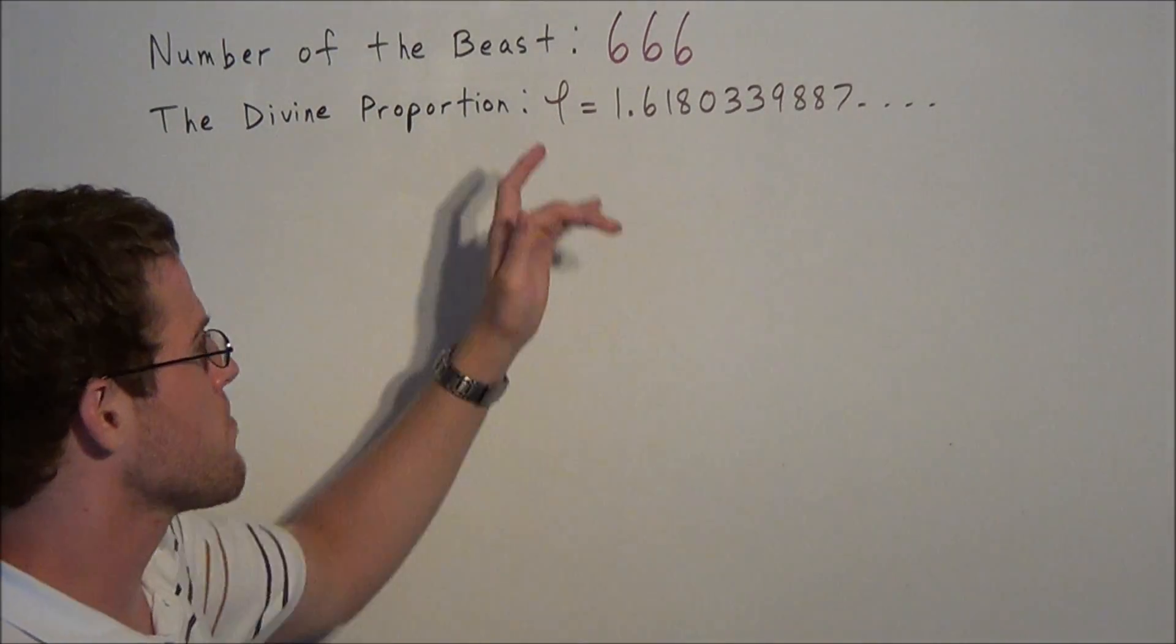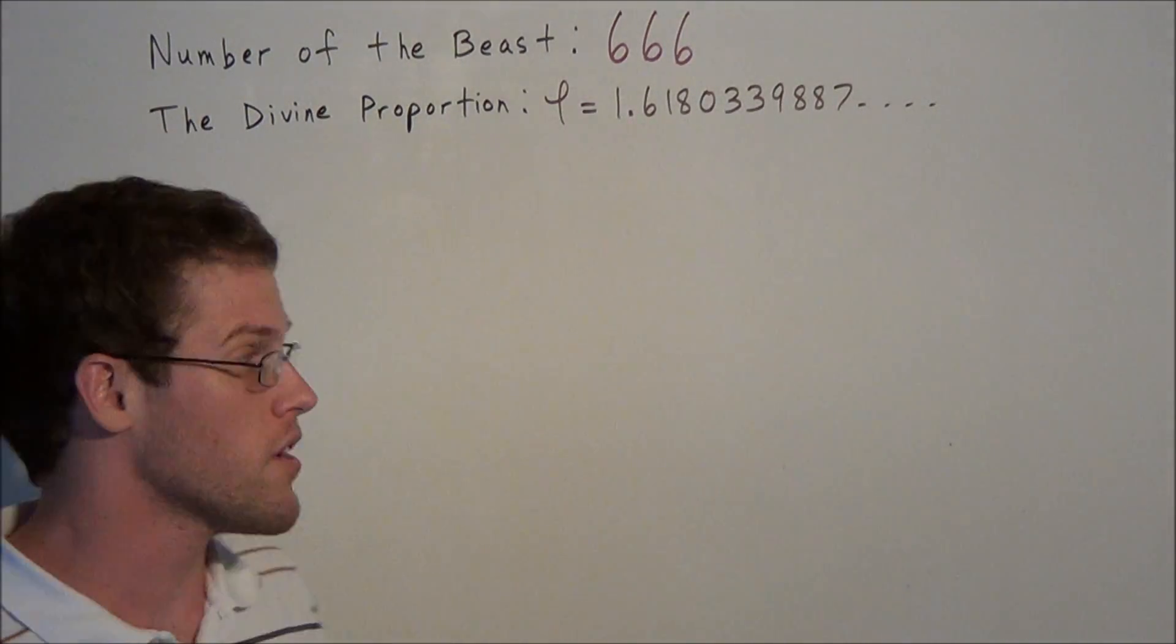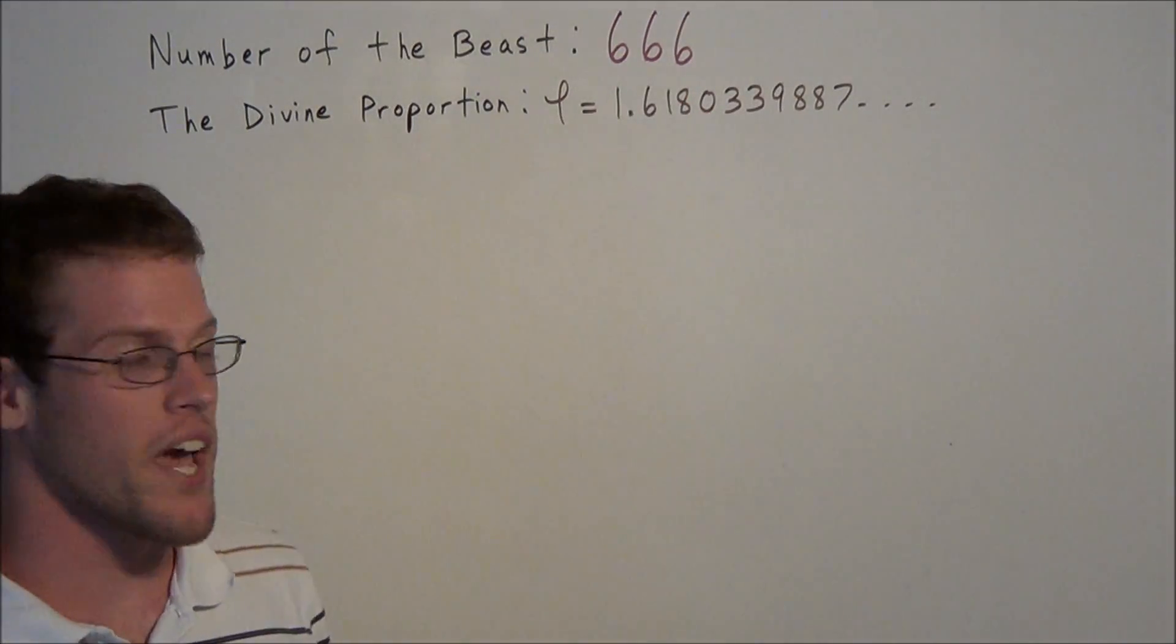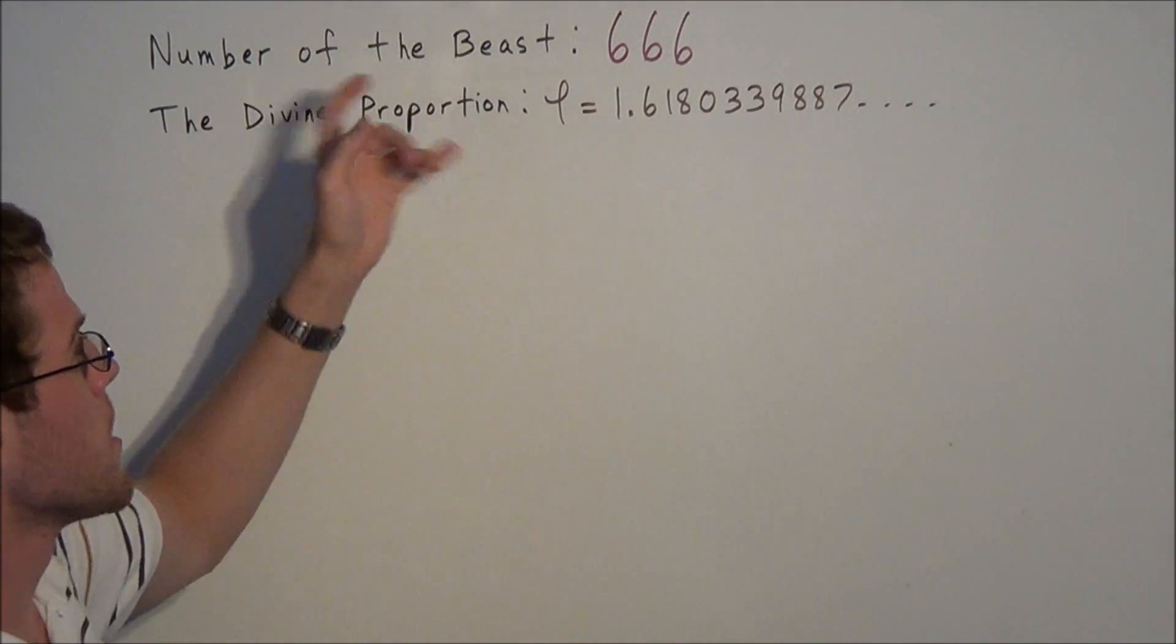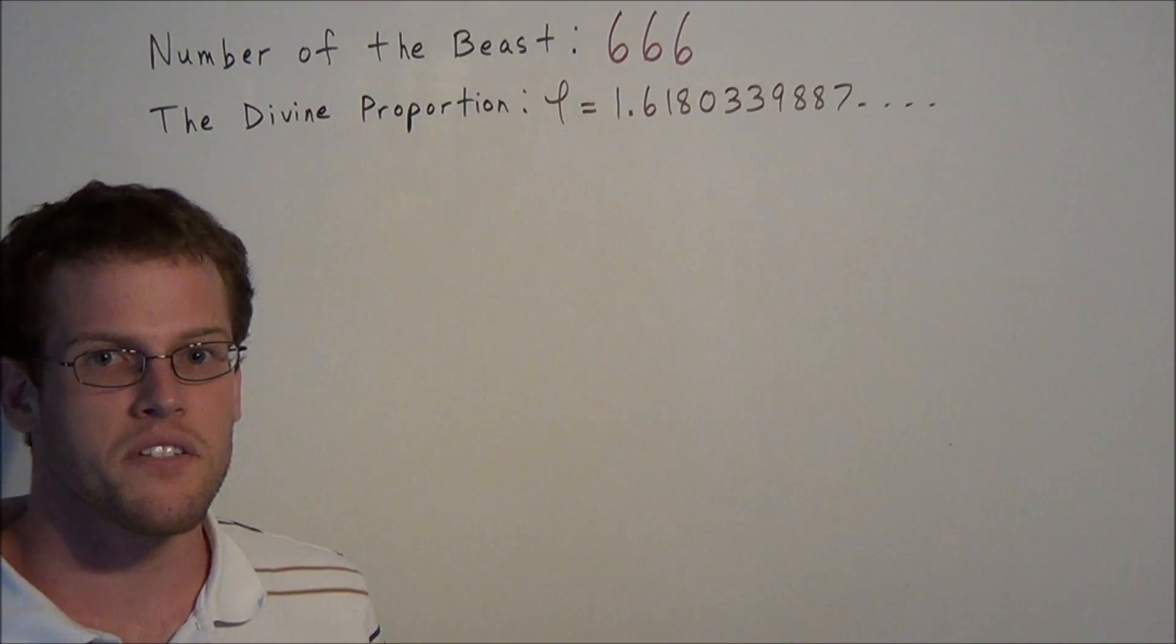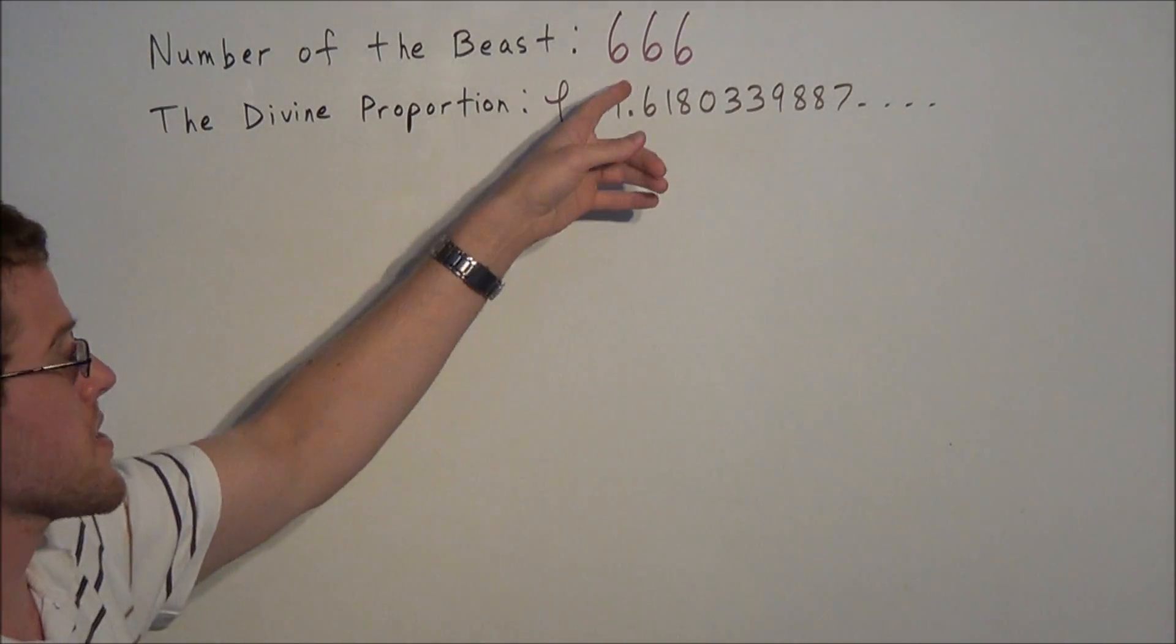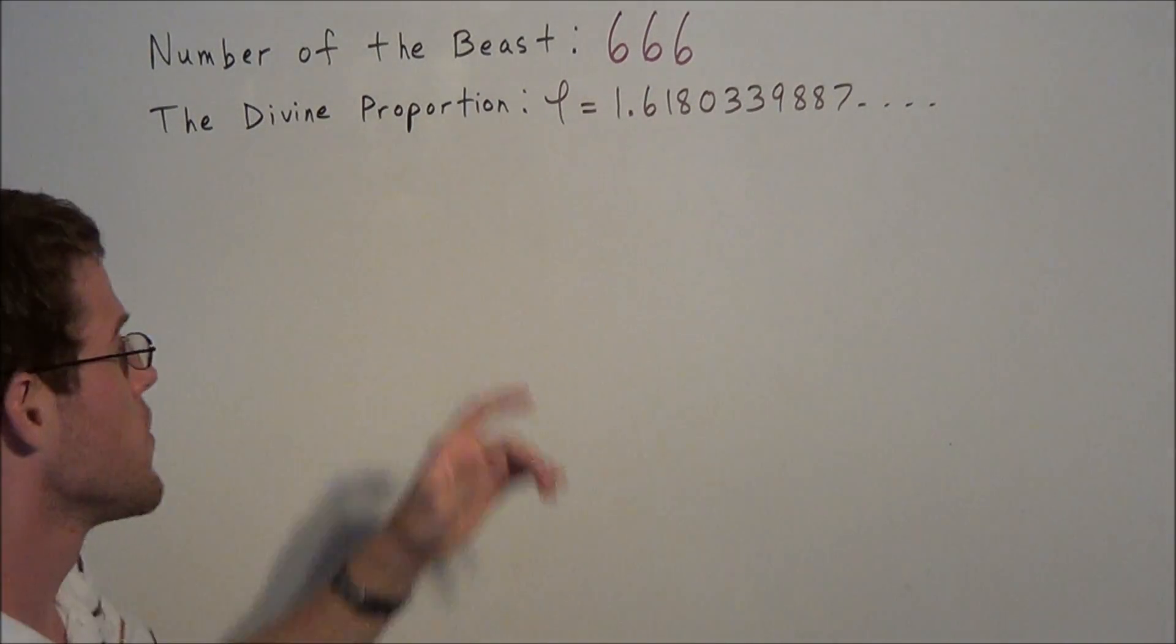Now, just for a little bit of background, although most of you probably already know, the number 666 in Christianity refers to the number of the beast, or as we could call the beast, the Antichrist. So in some sense, this is the unholiest of numbers.